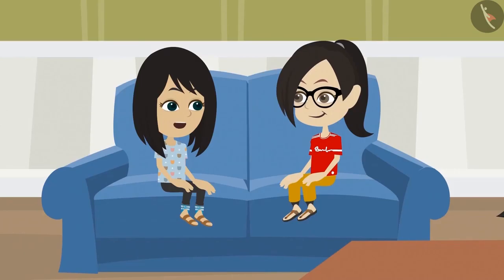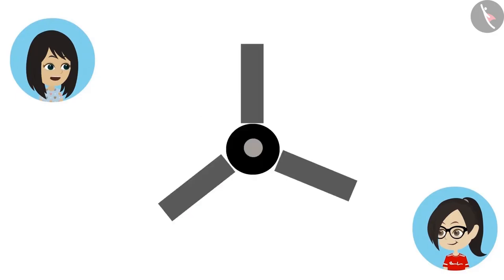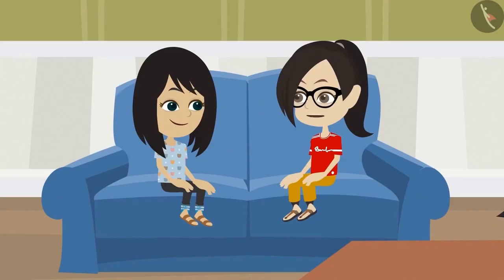I did not notice that. In the same way, the taps installed in our house also have round holes from where the water comes out. The fan also has a round shape in the center. Papa's glasses also have two round shapes. This means that a circle is used in those objects too which are not circular in shape.